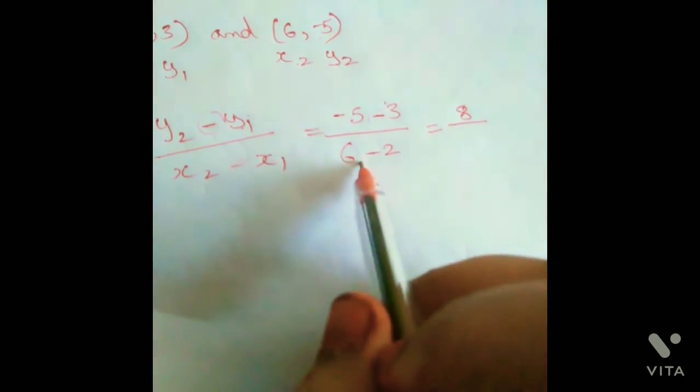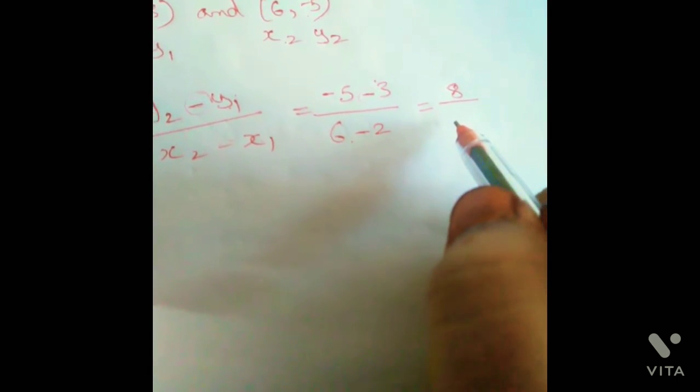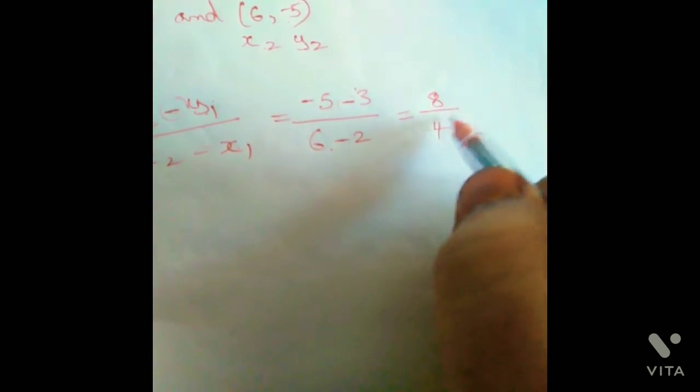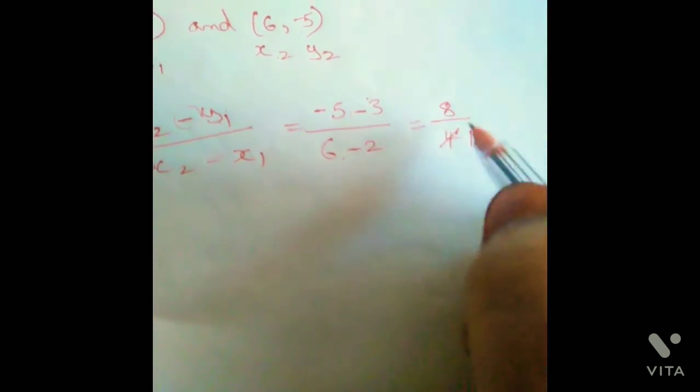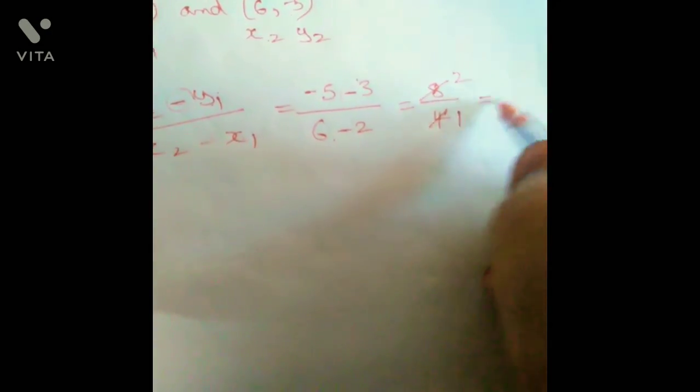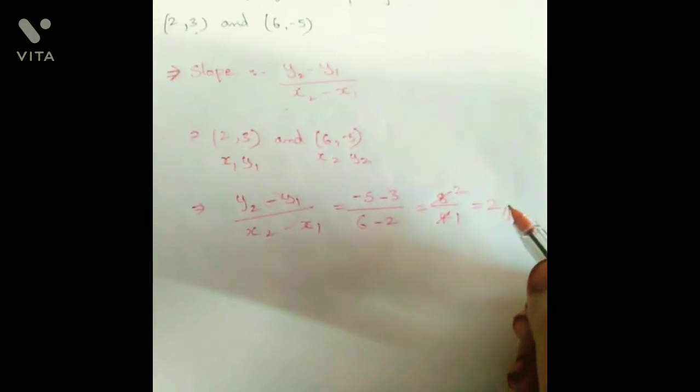Now this plus into minus, minus here, it will become 6 minus 2 is 4. Now you should cancel this, 4 to 1, minus 4 to 8 to 2 is our answer. Minus 2 is our slope.